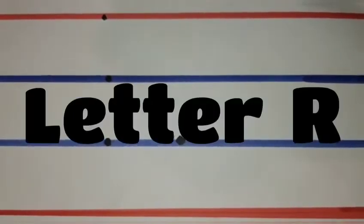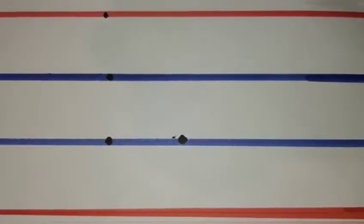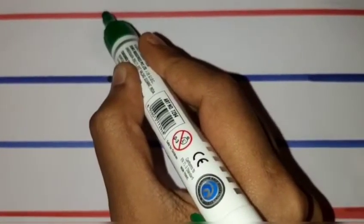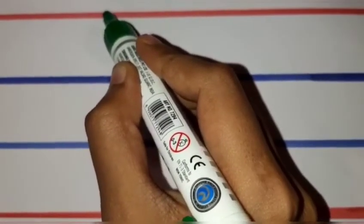Let us continue to trace the letter R. Draw the line from the first line till the third line in the form of a standing line.